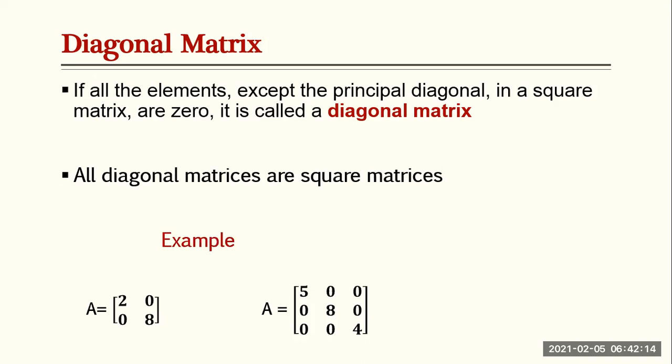For example, matrix A = [2, 0; 0, 8] is a diagonal matrix because apart from the principal diagonal, all other elements are zero. Two and eight are on the principal diagonal. Similarly, matrix B = [5, 0, 0; 0, 8, 0; 0, 0, 4] has five, eight, and four on the principal diagonal with all other elements zero, so both are diagonal matrices.